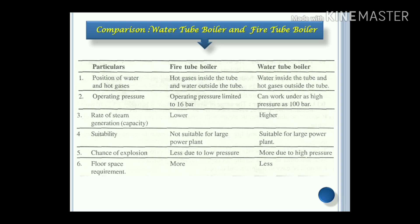Comparison of water tube boiler and fire tube boiler. According to the position of water and hot gases: in a fire tube boiler, hot gases are inside the tubes; in a water tube boiler, water is inside the tubes. Operating pressure: in a fire tube boiler, it is limited up to 16 bar; in a water tube boiler, it can be high pressure up to 100 bar. Rate of steam generation or capacity: fire tube boiler has a lower capacity compared to a water tube boiler. Suitability: fire tube boiler is not suitable for large power plants. Regarding explosion risk: fire tube boiler is less explosive because of its low pressure; water tube boiler is more explosive due to the high pressure.